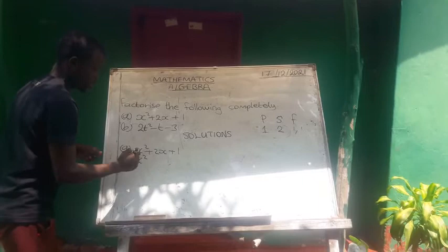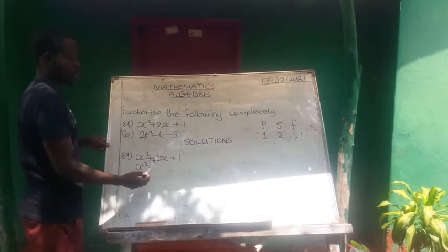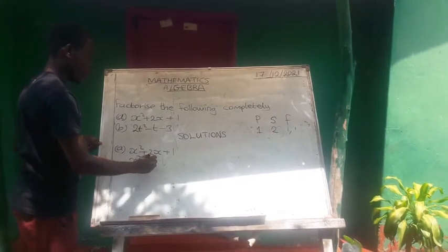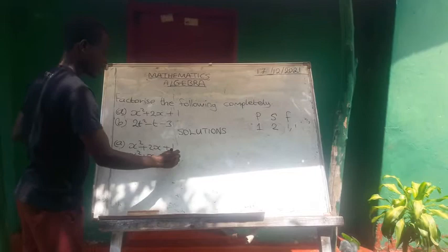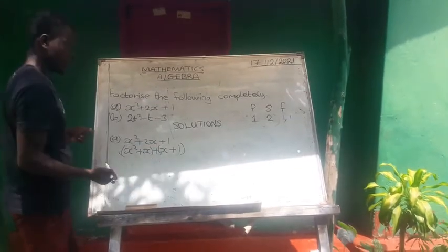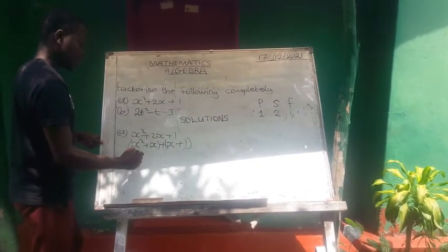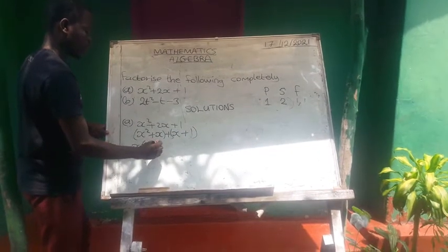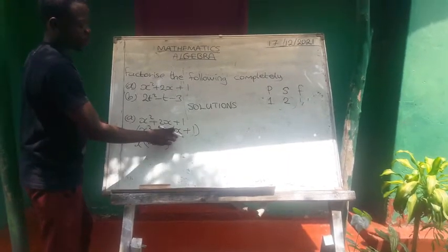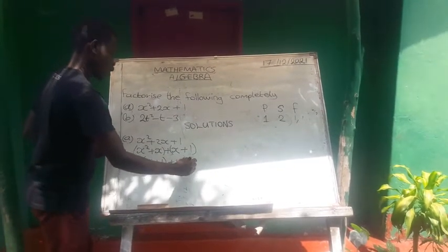So x squared, the essence of us looking for the factors, we have to remove where there is 2x and replace with the same factors. So we are going to have x squared plus x plus x plus 1. Then we cross in the bracket. So now the common factor here is x, x into x squared, we shall remain with x plus x into x, 1. So what is going to be common here is 1. So this will be x plus 1.